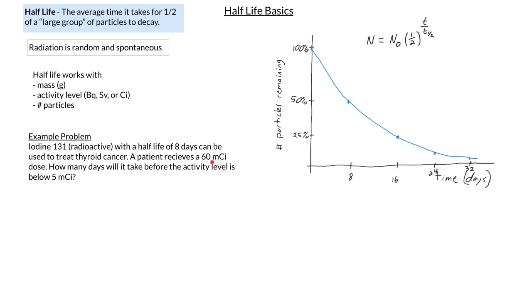This patient received a 60 millicurie, that would be a unit for activity level or radiation, 60 millicurie dose. And I want to know how many days will it take before the activity level drops all the way down to somewhere below 5 millicurie, because for a while that person's actually radioactive and you actually don't necessarily want to be around them for a little while.